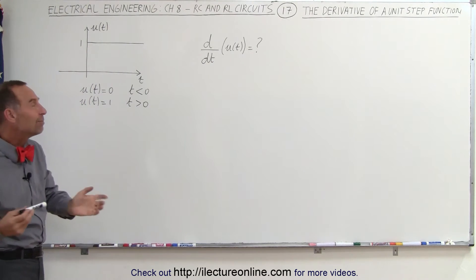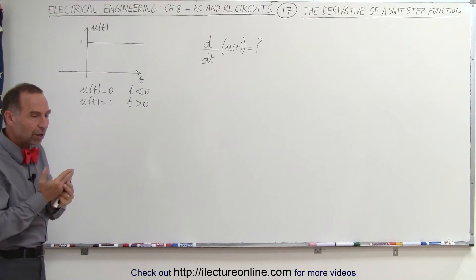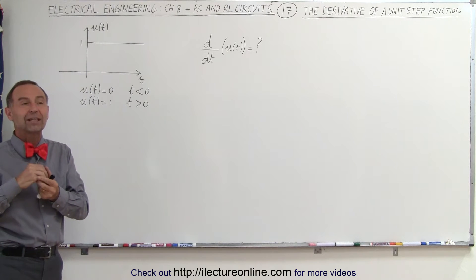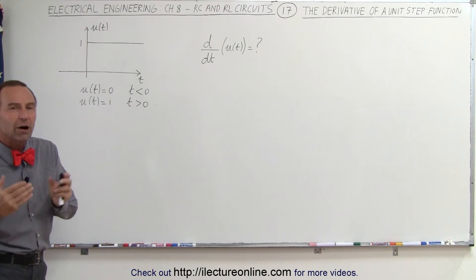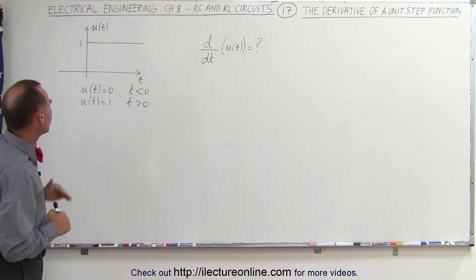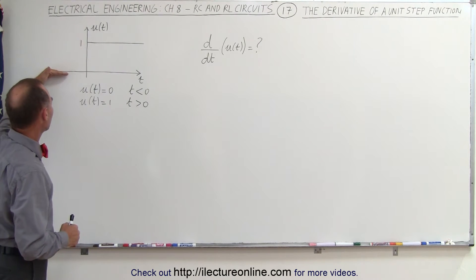The reason why it seems kind of mysterious is because the derivative of a function gives us the rate of change of the function. It gives us the slope of any point of the function. But notice, the slope is equal to 0 over here.